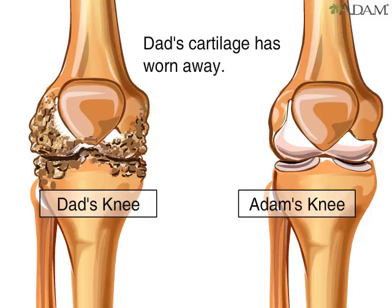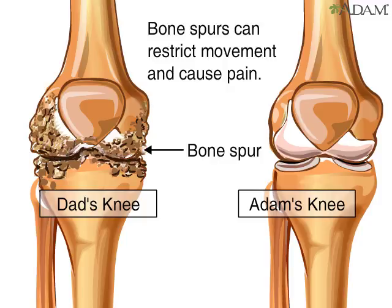The cartilage of the affected joint is roughened and becomes worn down. As the disease progresses, the cartilage becomes completely worn down and bone rubs on bone. Bony spurs usually develop around the margins of the joint, and part of the pain results from these bone spurs, which can also restrict the joint's movement.